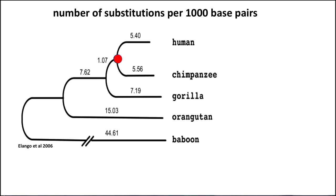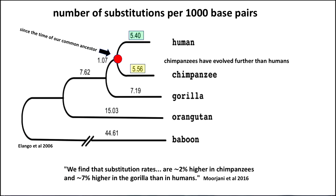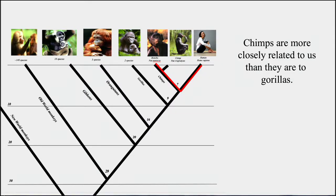Now you can look at different things, you can look at the DNA and substitutions per thousand base pairs of the DNA. Since the time of our common ancestor which was the red dot, you can see that chimpanzees have evolved further than humans. How do you see that? Because 5.56 is larger than 5.40 so chimps have evolved a little bit more since our common ancestor than our lineage has. Another way to say that: in a more recent paper we find that substitution rates are about 2% higher in chimpanzees and about 7% higher in gorilla than in humans.